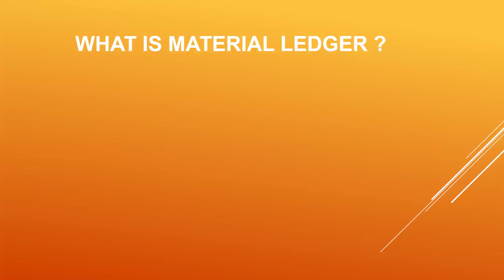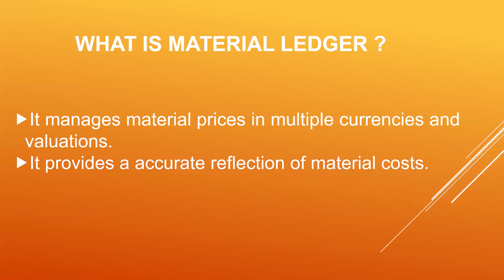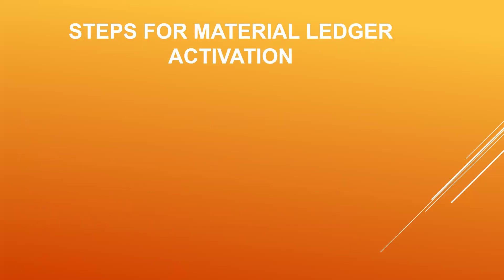What is the material ledger? The material ledger manages material prices in multiple currencies and valuations. Group currency and company code currency can be maintained in the material ledger. It provides accurate reflection of material cost. Steps for material ledger activation: OMX1, OMX2, OMX3, and CKM_START transaction.